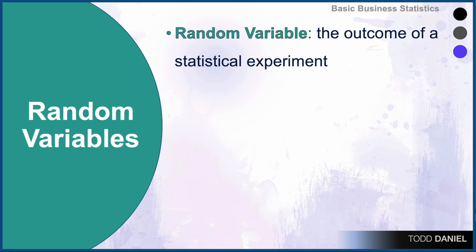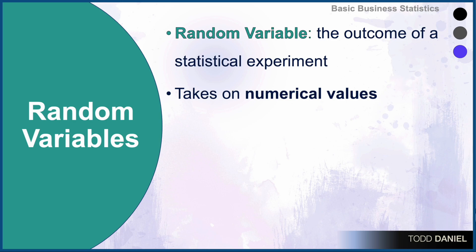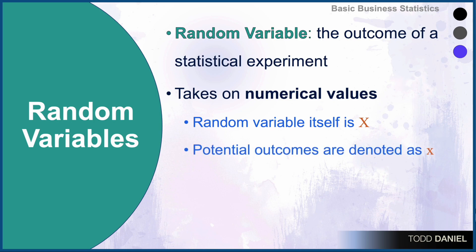The random outcome of a statistical experiment is called a random variable, and random variables always take on numeric values. The random variable itself will be denoted by a capital X, and all of the potential outcomes will be denoted by a lowercase x.